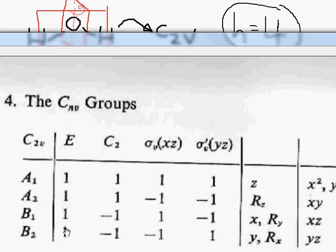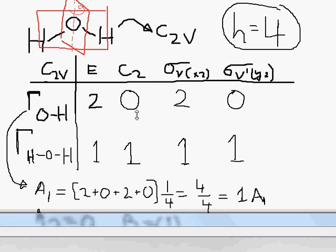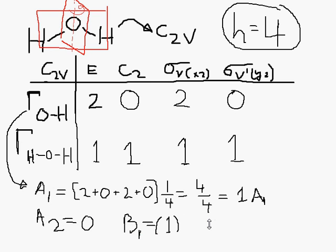And for B2, one, negative one, negative one, one. So we're going to have one times zero times negative two times one. So B2 is going to also equal zero.